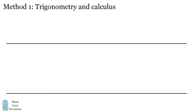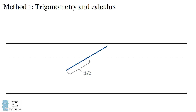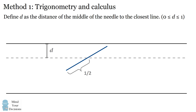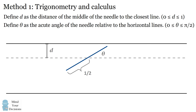We'll magnify our diagram and focus on the midpoint of the needle as a reference — this is at one-half distance from one of the ends. One variable we'll define is the distance d, which is the distance of the middle part of the needle to the closest horizontal line. d will be between 0 and 1, because the midpoint can at most be halfway between two horizontal lines. The next variable is the angle theta, defined as the acute angle of the needle relative to the horizontal lines. Theta will always be between 0 and pi over 2, or 0 and 90 degrees.